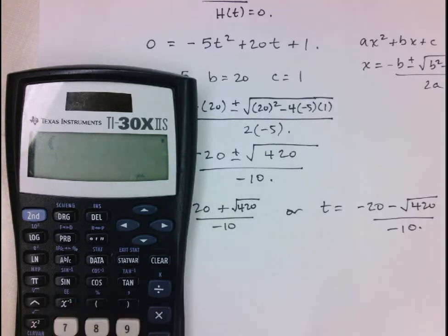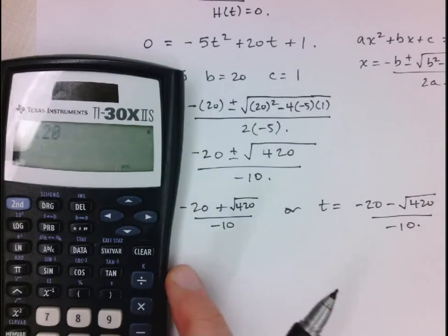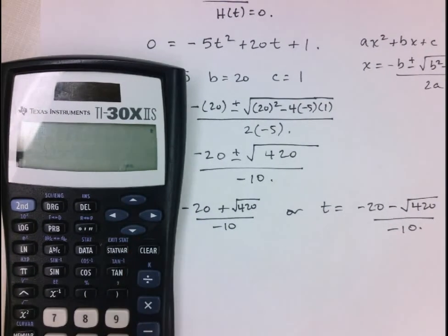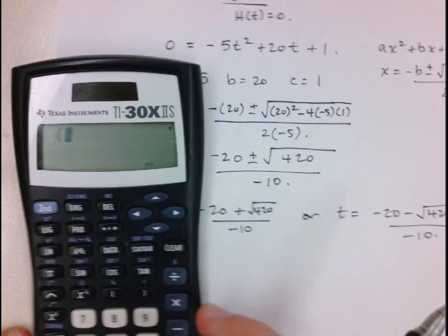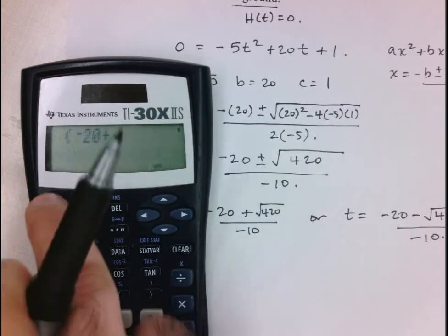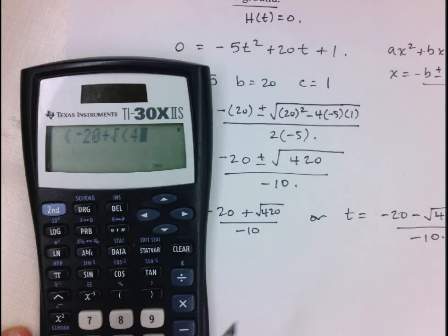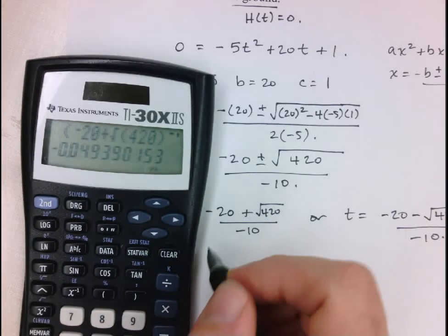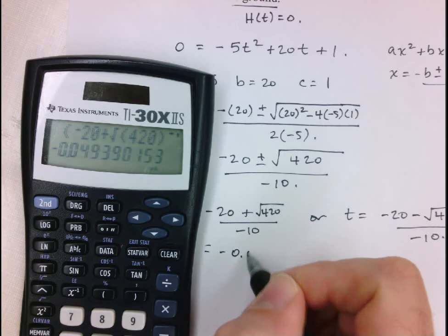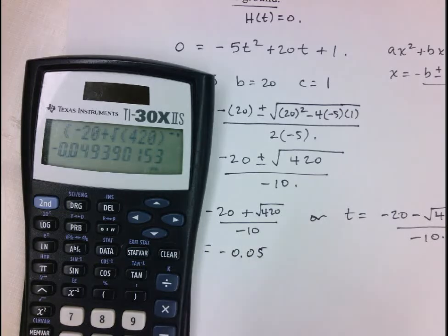So I'm going to open up my bracket, or sorry, let me start over. So again, in brackets, negative 20 plus the square root of 420, close off the bracket for the numerator and then divide it by negative 10. And we get here as our answer, that's equal to negative 0.05.